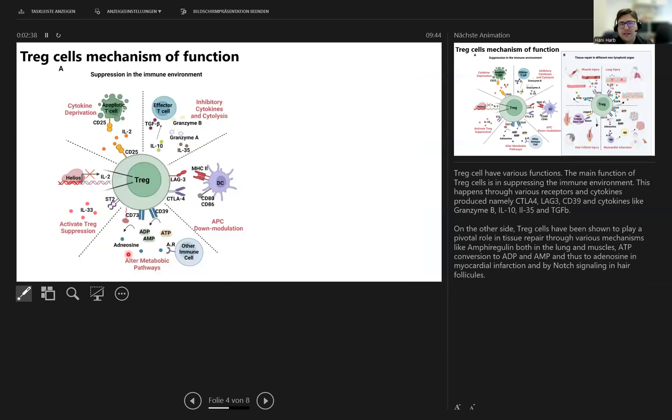As for mechanisms of action for T-reg cells, we have various mechanisms. One of them is suppressing the immune environment. This happens through different receptors and cytokines produced, namely IL-10, TGF-beta, GZMB, and IL-35 on one side, as well as different receptors like LAG-3, CTLA-4, and CD39.